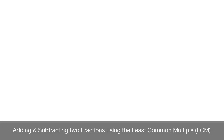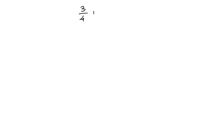We now learn how to add or subtract two fractions using the least common multiple. Let's see how that's done. Let's say we have to calculate 3 over 4 plus 1 over 6. We can do this in three steps.